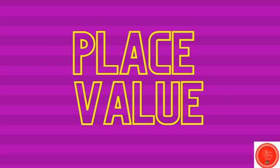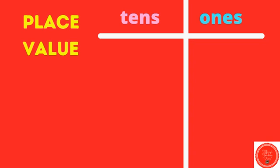Let's talk about place value. This place value chart shows the ones place and the tens place. When we have the number one, there is one in the ones place, and there aren't any tens. So we can leave the tens place empty.